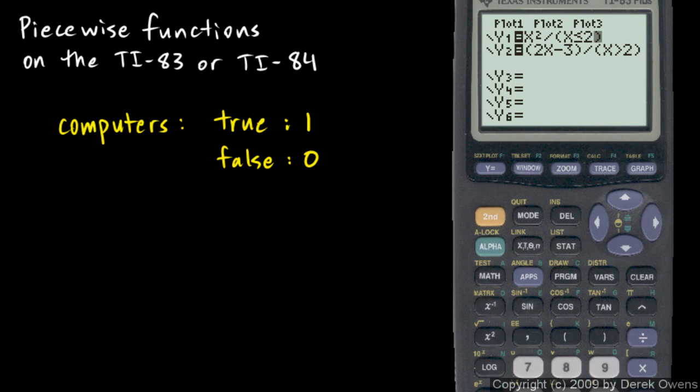Then when x is greater than 2, that comparison, which says x is less than 2, that becomes false. And the computer interprets false as a 0, and then y1 is x squared divided by 0. For the x values greater than 0, that denominator, x is less than or equal to 2, evaluates to false, which is 0, and you can't divide by 0. So if y1 is x squared over 0, well, that's undefined.